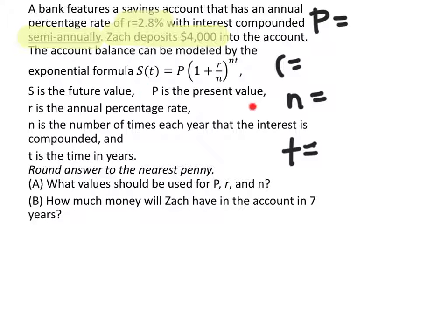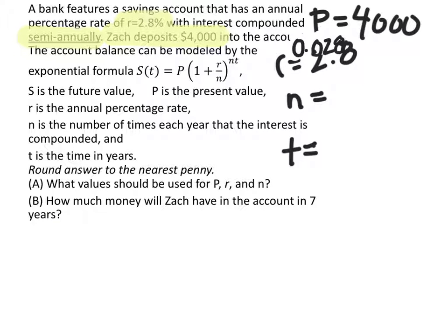P is the present value — that's pretty much just how much he's putting into the account. So we know that the present value is $4,000. The words told us the rate is 2.8%. And N is the number of times each year that it's compounded, and since it's semi-annually, it happens twice every year. Notice the equation also has a T, but it didn't say how many years this will occur for, so in part A we don't have to worry about it.